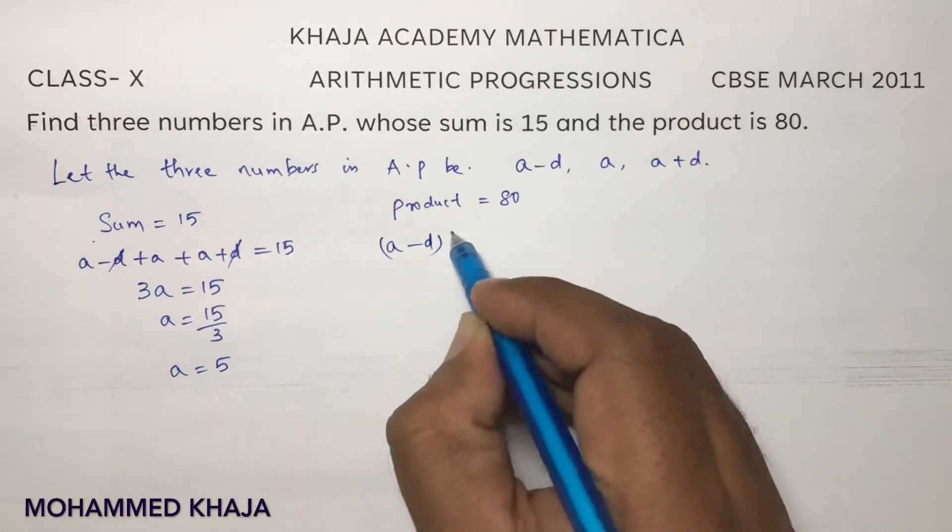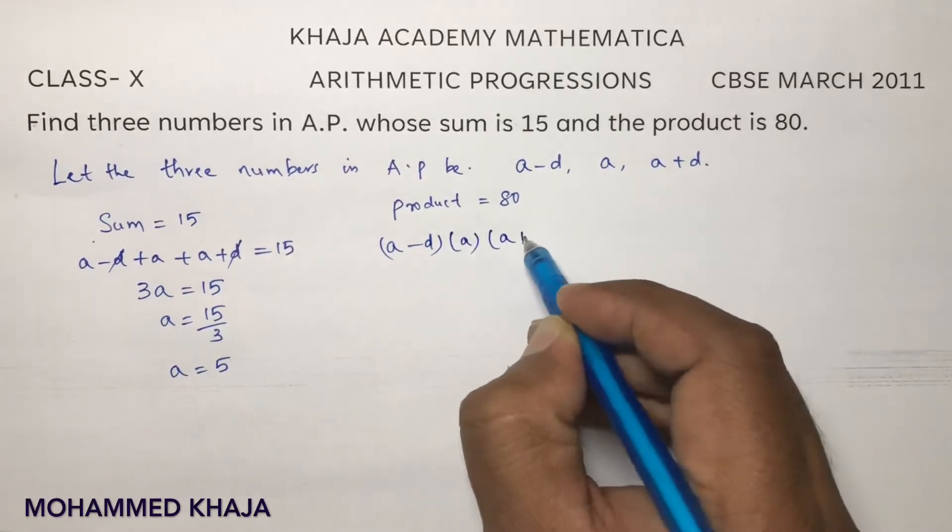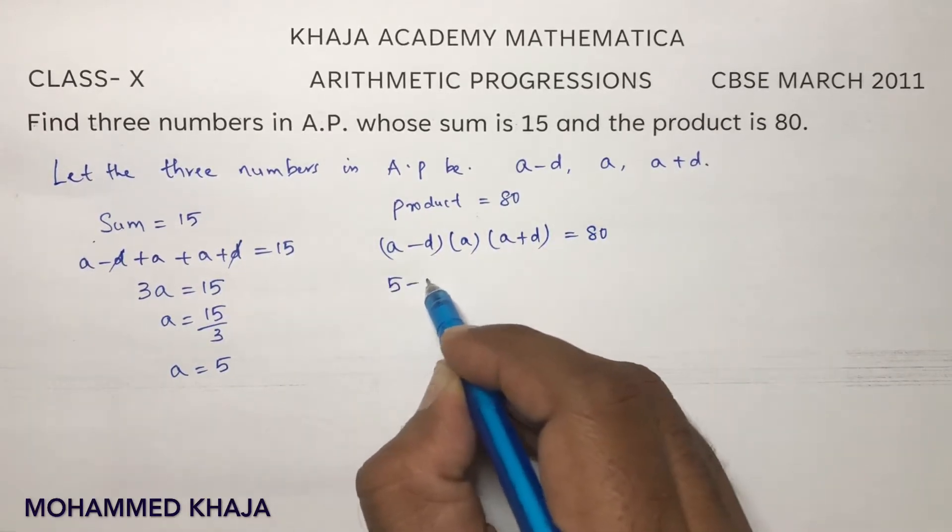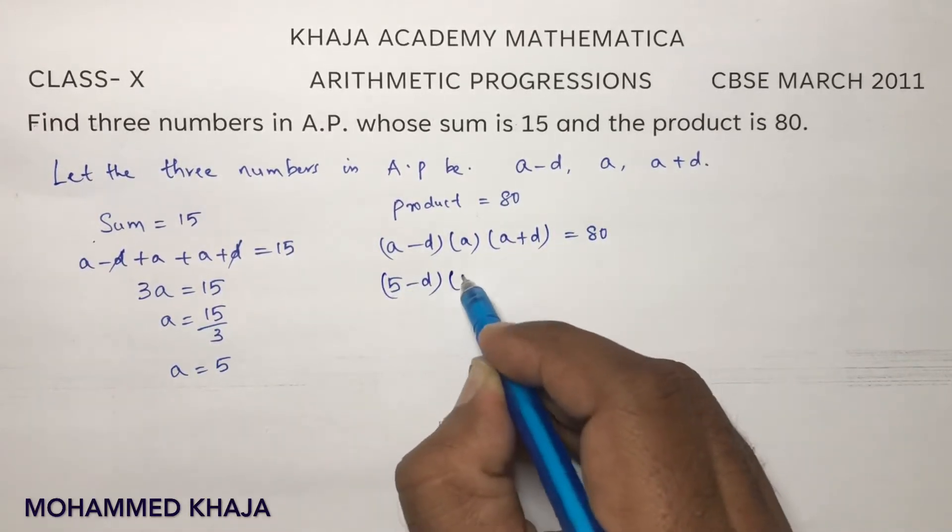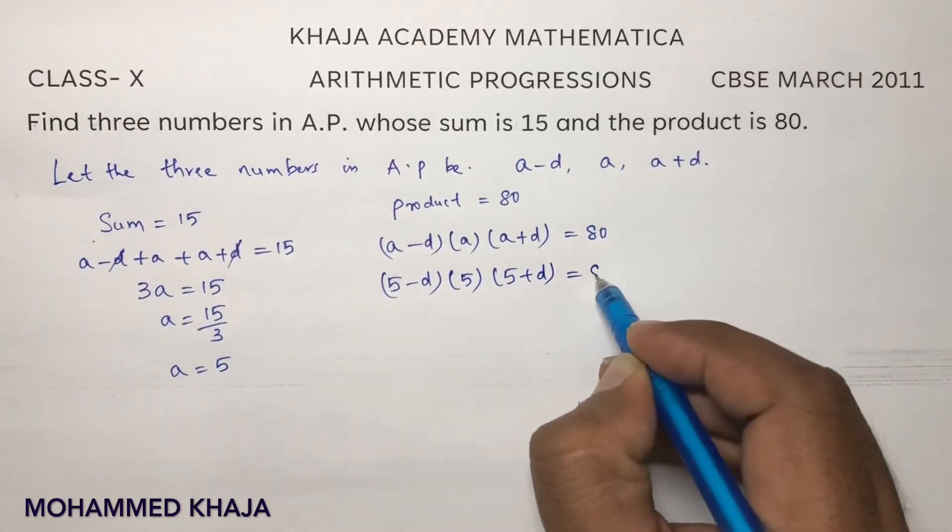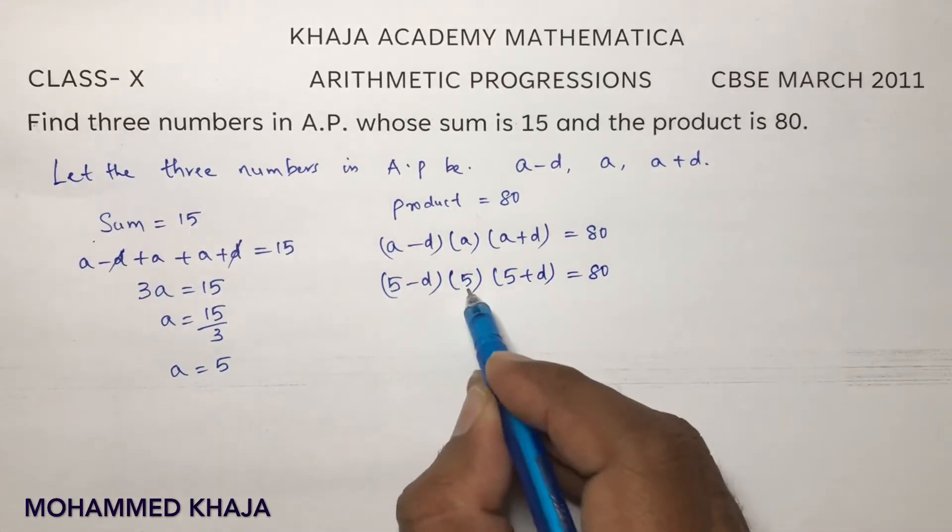Now here product: if you multiply these three numbers A minus D, A, and A plus D equals 80. A is 5. 5 minus D into 5 into 5 plus D equals 80.